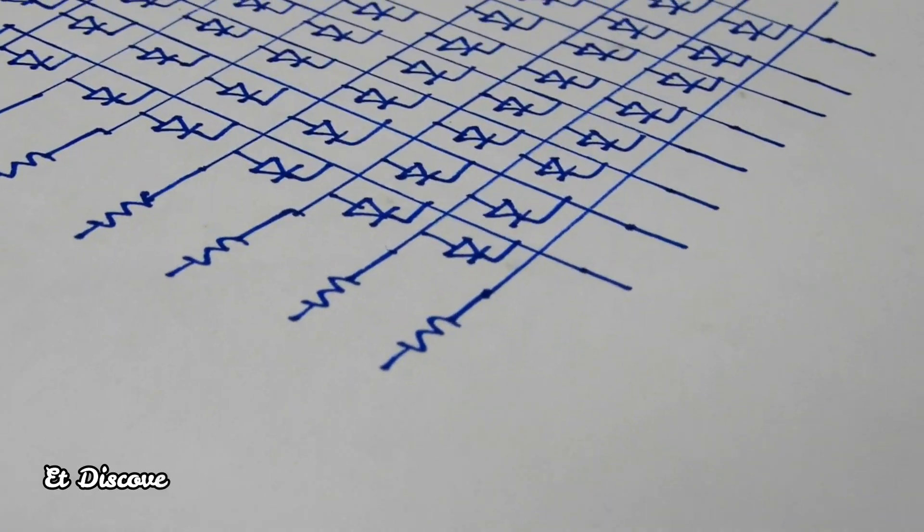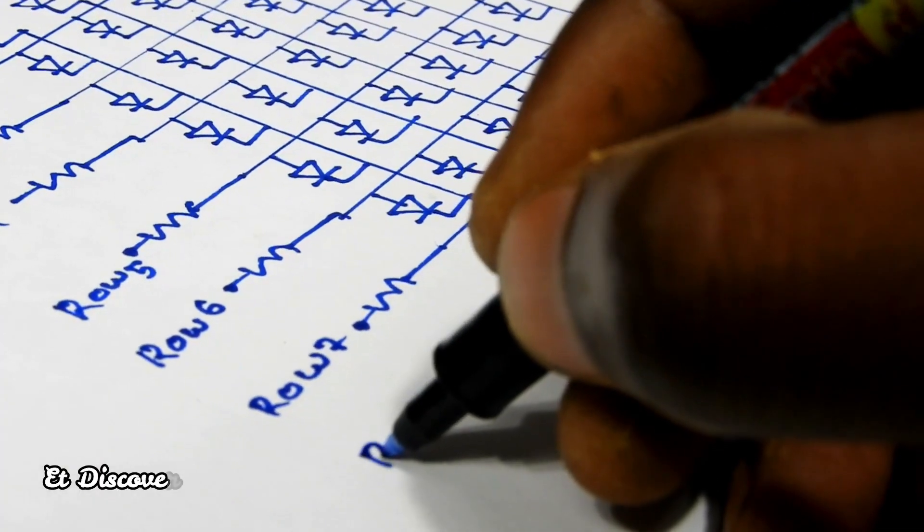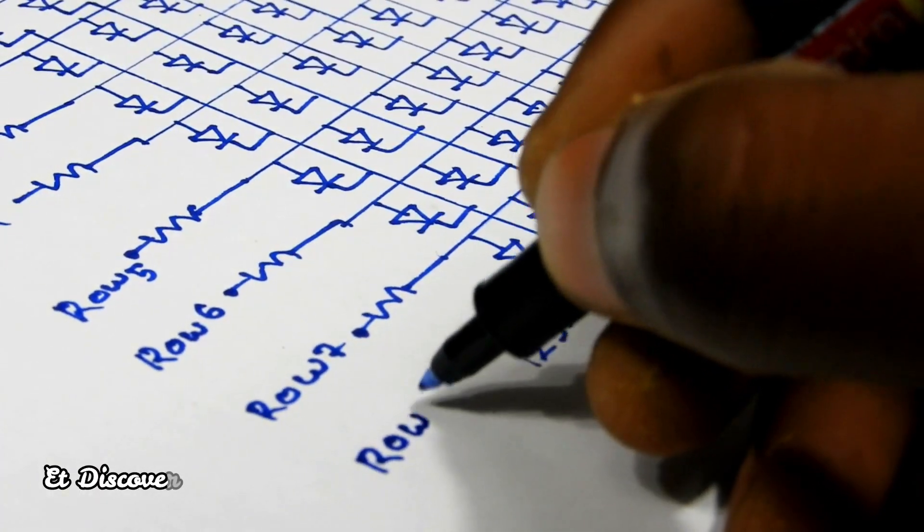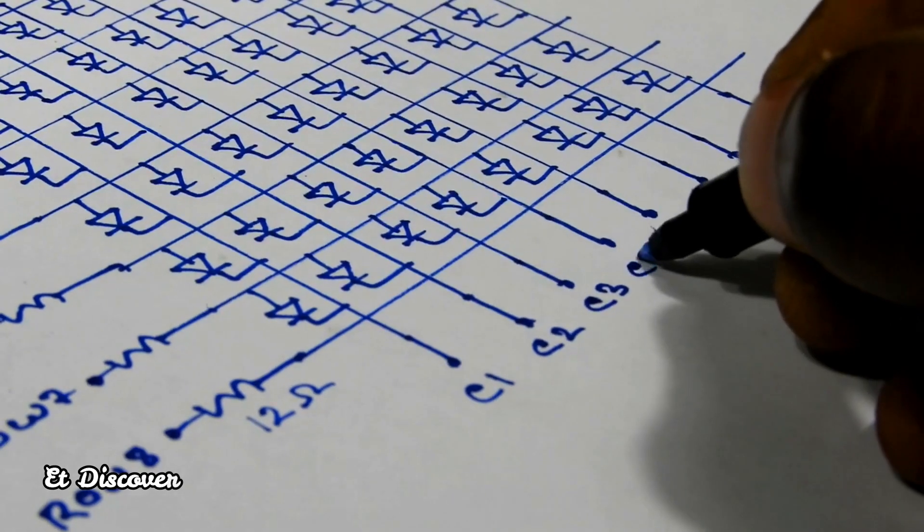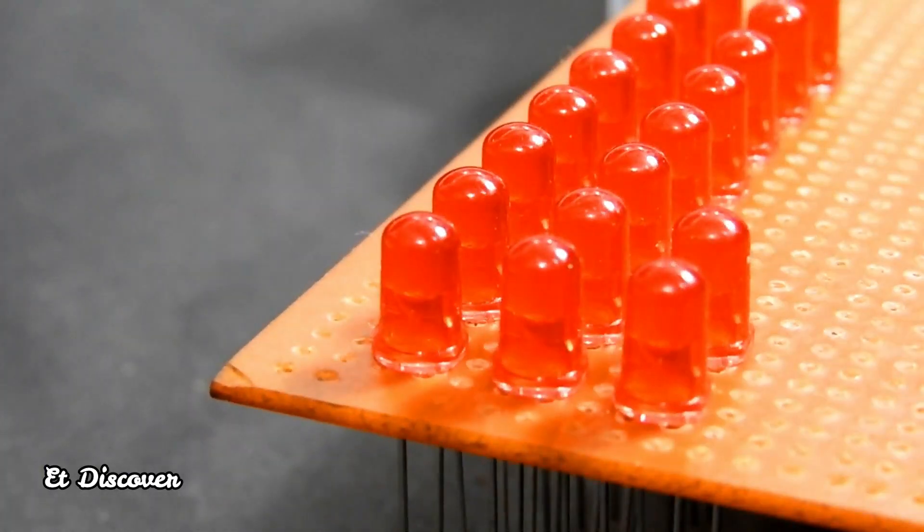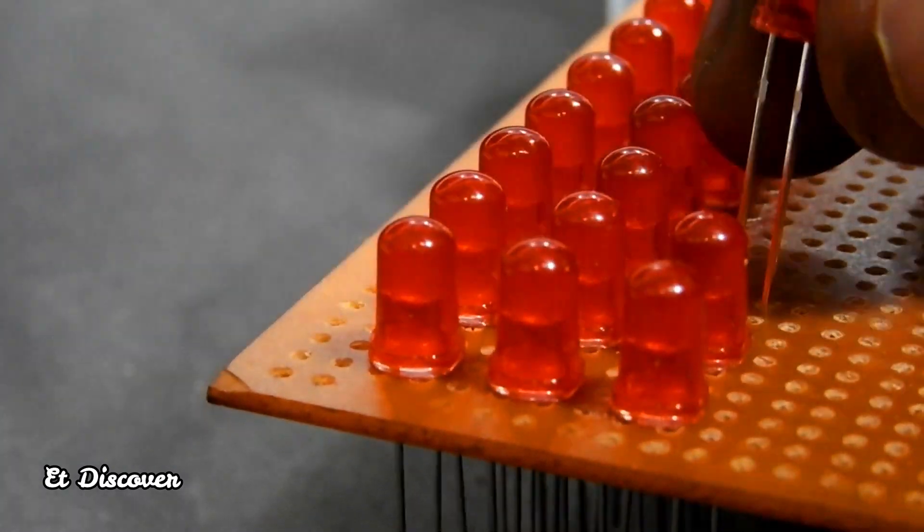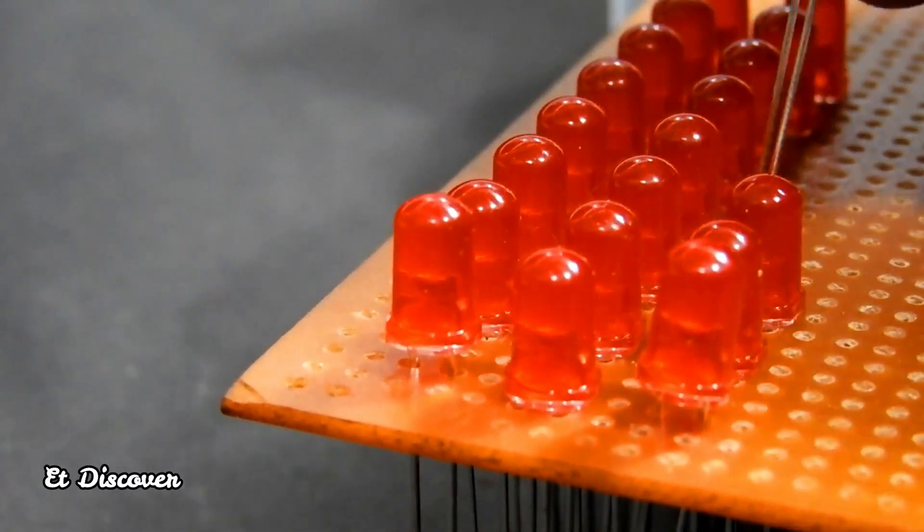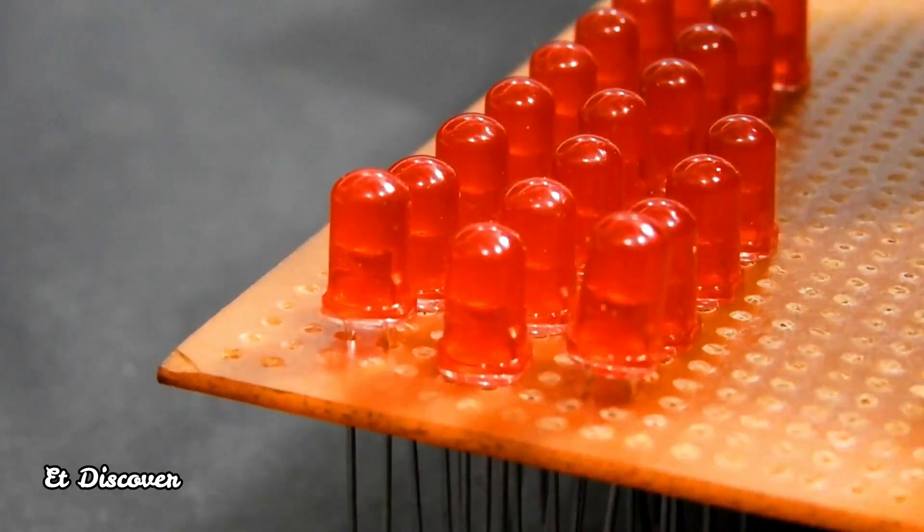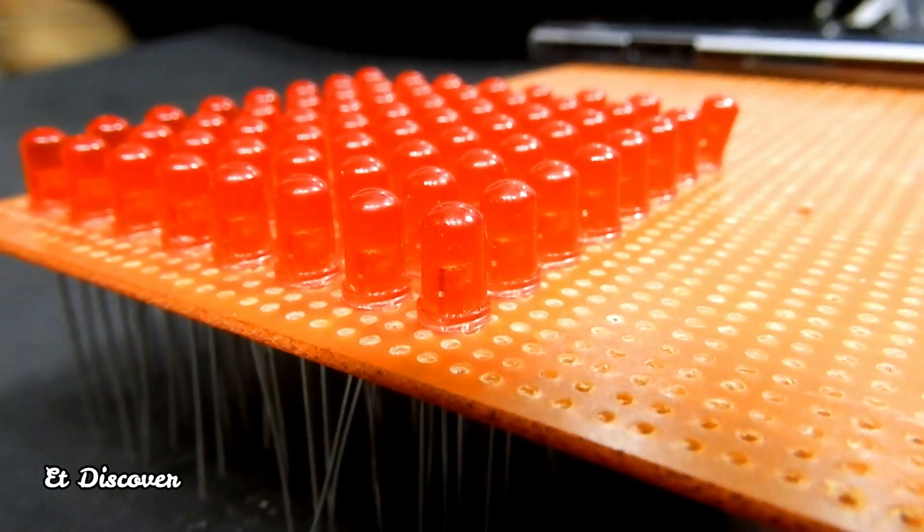First I create a diagram for the 8x8 matrix display. In the diagram I wrote the row and column output pins. And then I started installing the LEDs on the PCB board. Each LED has an equal distance between them. I have set every LED very nicely.